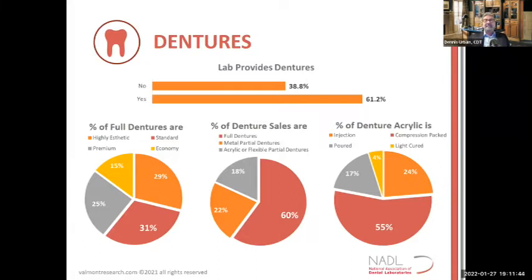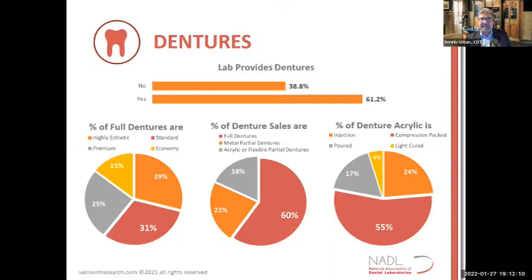The latest NADL survey shows the percentage of full dentures: standard is about 31%, premium about 25%, highly aesthetic about 15%, and economy about 29%. The percentage of dental sales is about 60% full dentures compared to metal partials and acrylic or flexible partials. And the percentage of denture acrylic processed by press-pack is still 55% — still the number one method — while injection is about 24%.